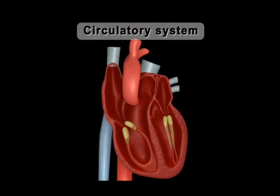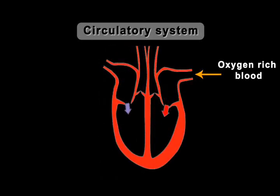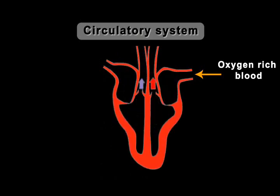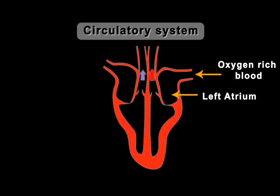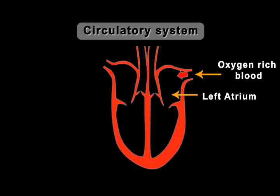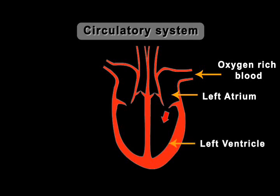Having known the structure of the heart, let's find out how it functions. Blood becomes oxygen rich by absorbing oxygen in the lungs. The function of heart starts when oxygenated blood is carried from the lungs to the left atrium of the heart by means of the pulmonary vein. The left atrium relaxes when this blood is drawn into the heart. Now, the left atrium contracts and simultaneously the left ventricle relaxes, pushing the blood into the left ventricle through the one-way valve.